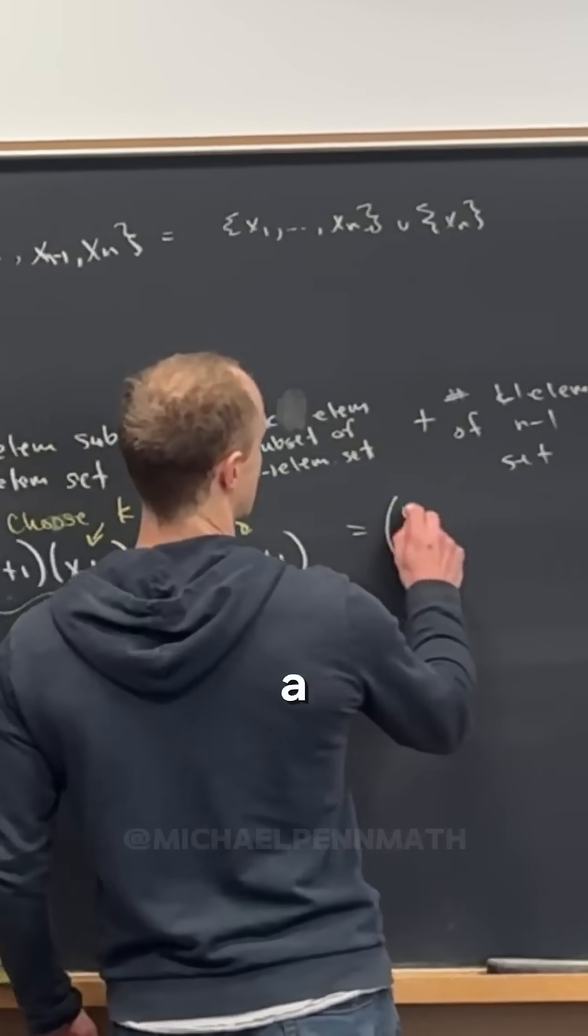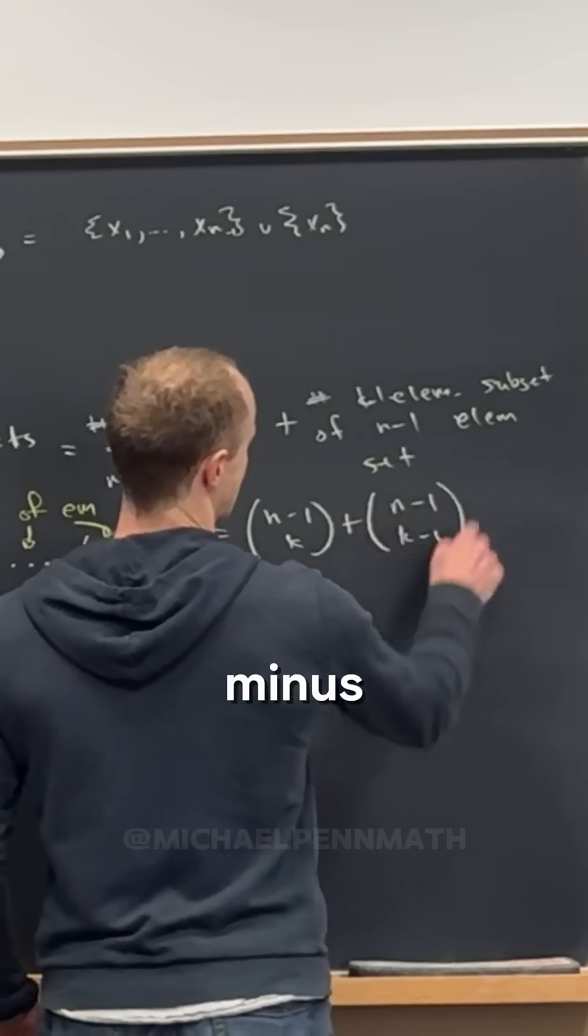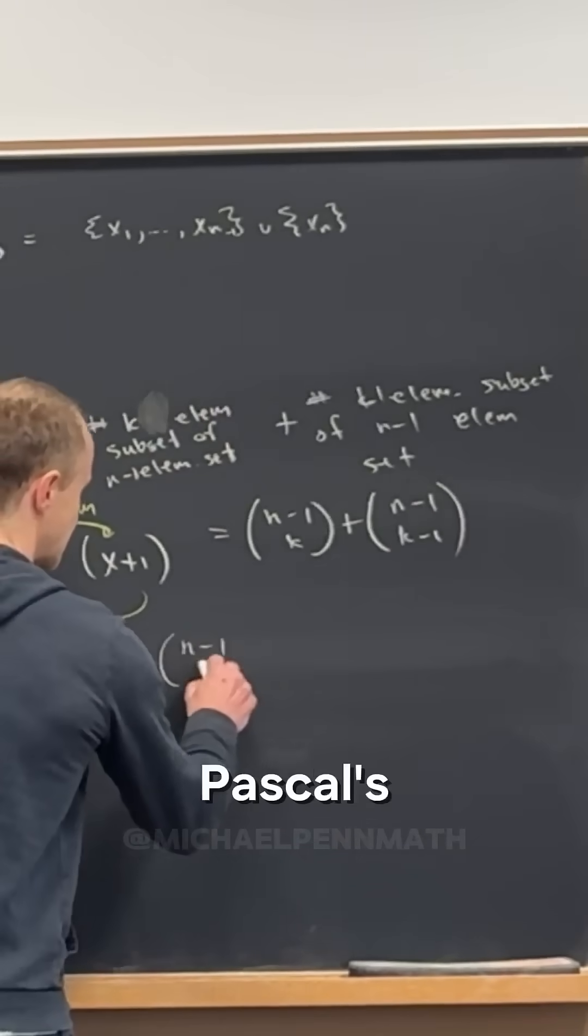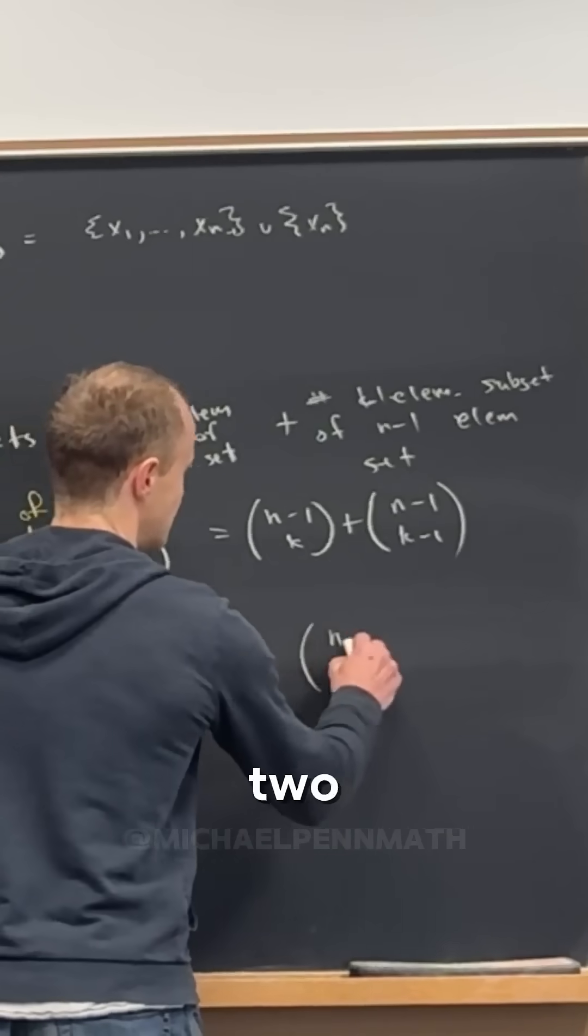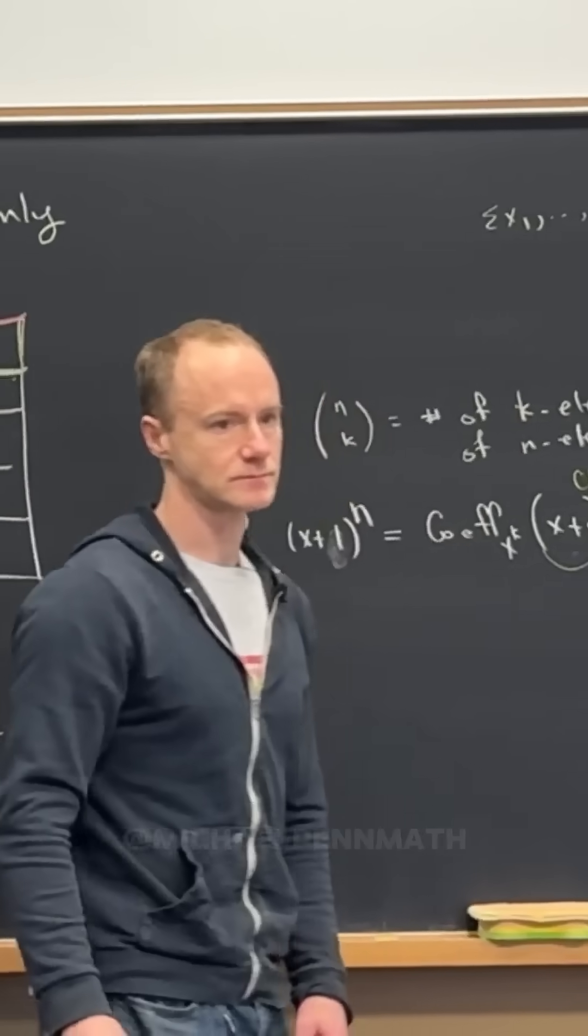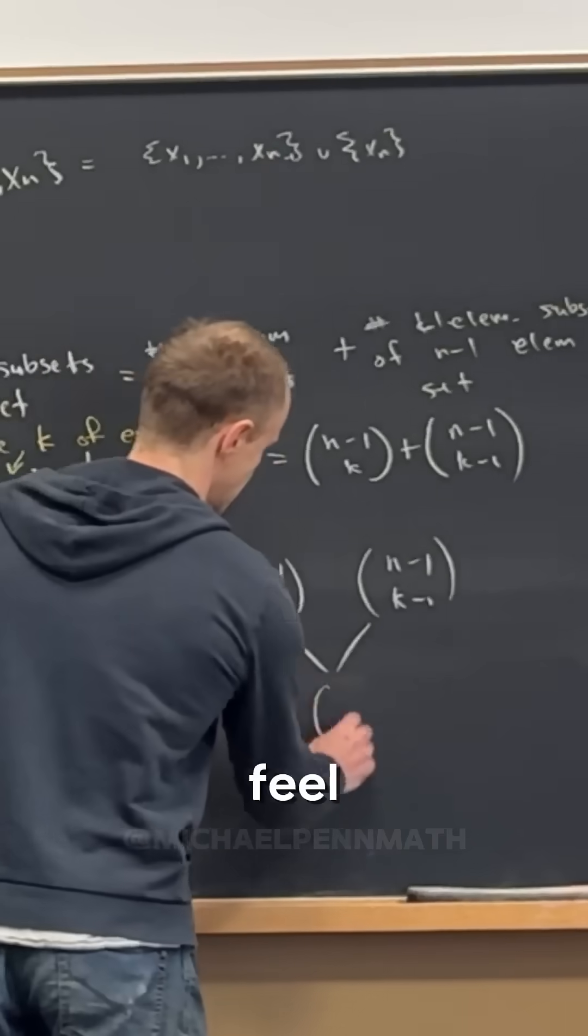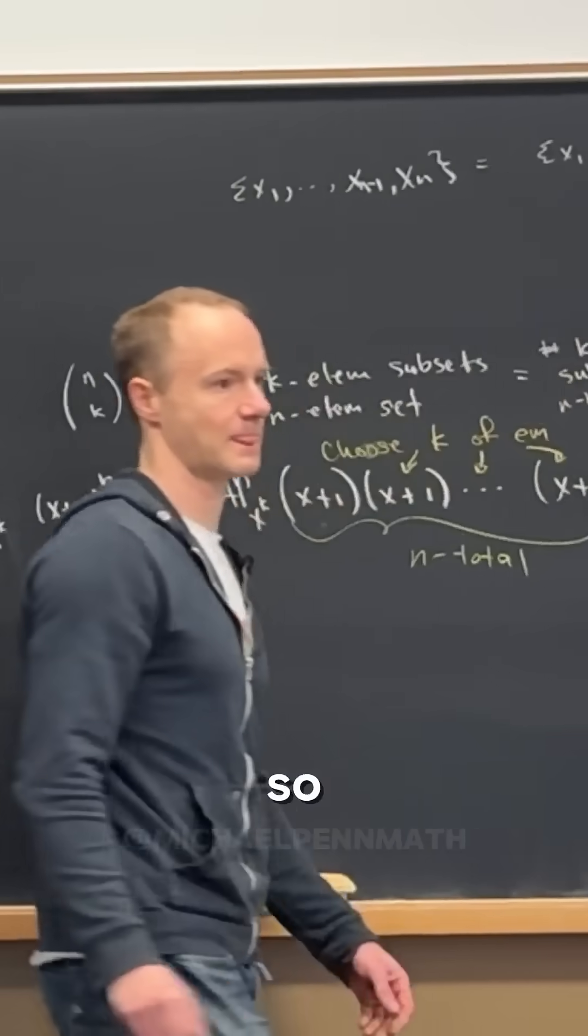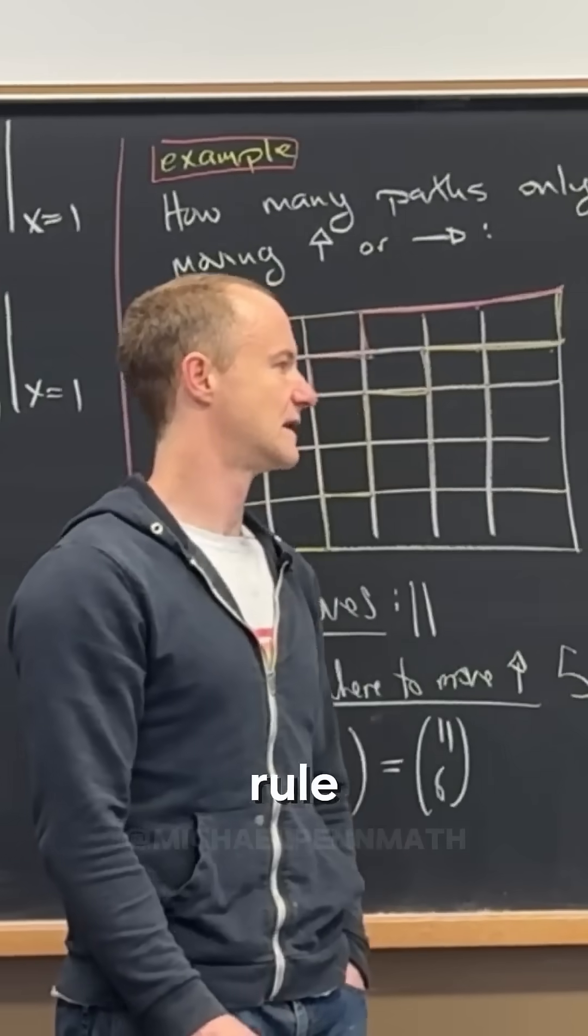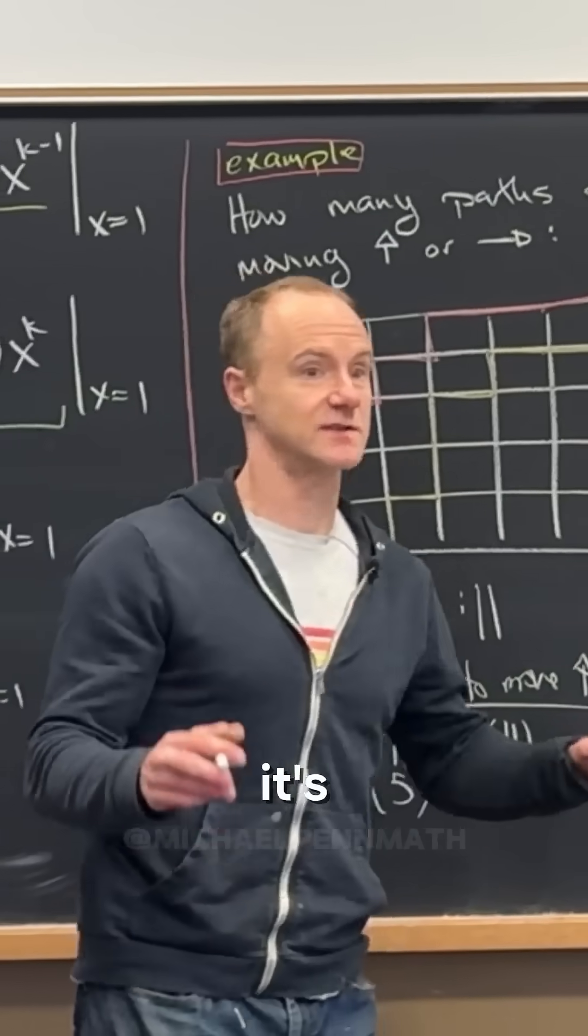But now observe that this is n minus one choose k plus n minus one choose k minus one. But now if you make Pascal's triangle like so, if you make Pascal's triangle, let's say that these are two entries in Pascal's triangle. Who's right below that? Yeah, I feel like that. So that's why. That's so cool. It makes sense. Yeah, that's just because of our rule. It's all connected.